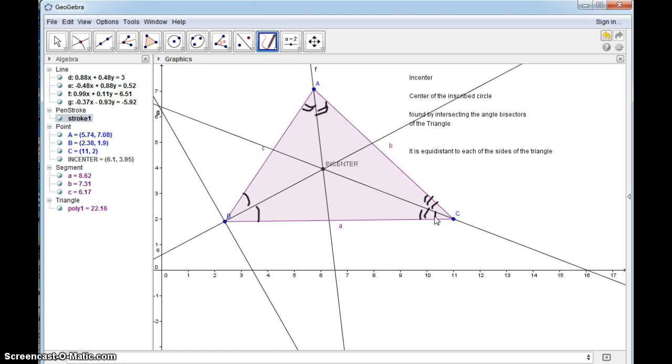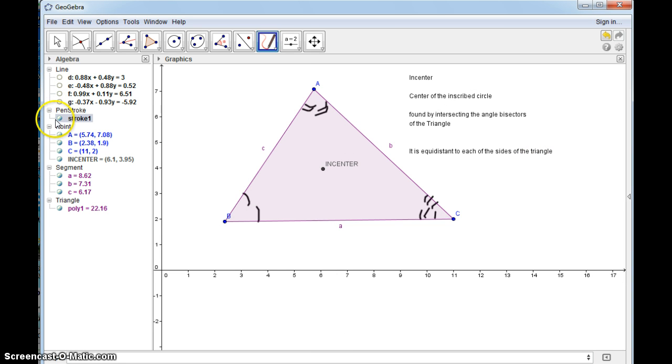Now this is going to give you the center of the inscribed circle, but we need the radius. That's where this point comes in. It's very helpful. So I'm going to remove these lines and keep the incenter and remove the stroke.